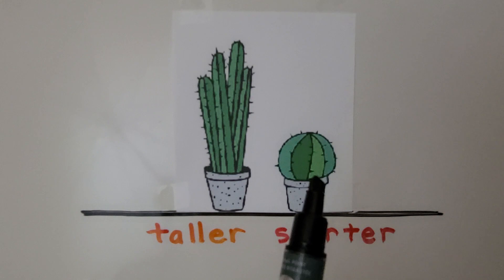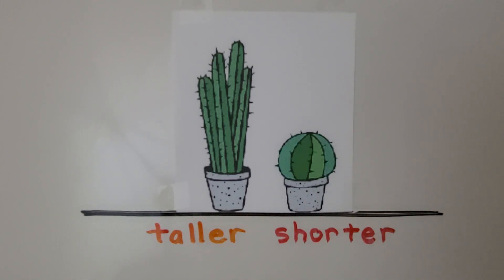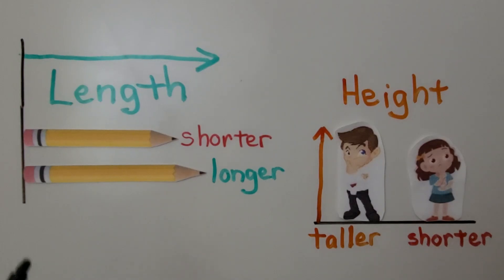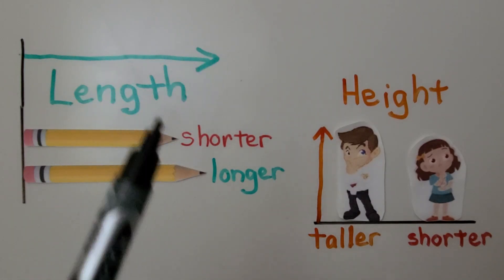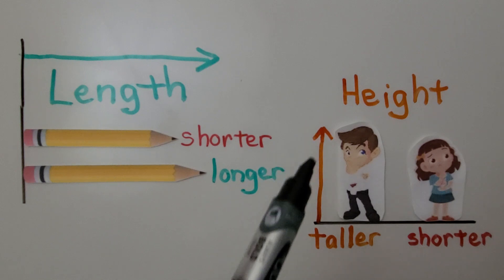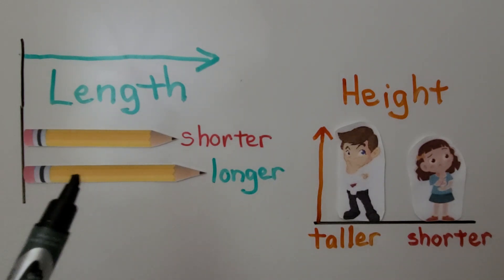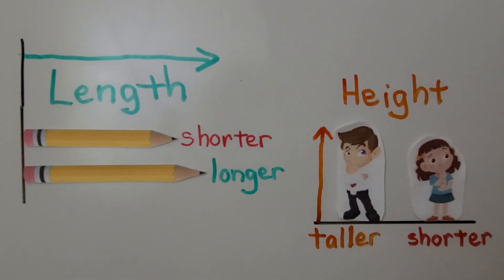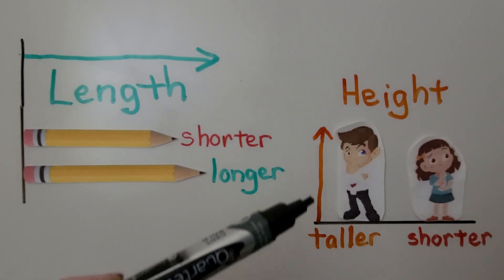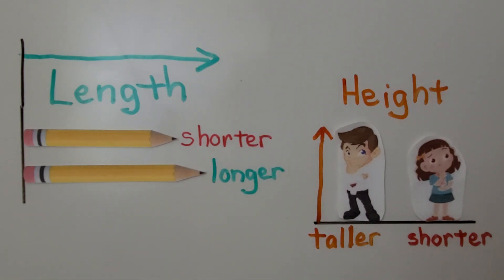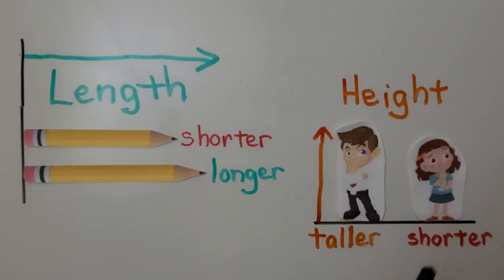This round cactus is shorter than this cactus. Length is different than height. Length tells us how long something is, how long an object is. Height tells us how tall something is. Sam is taller. Emma is shorter.